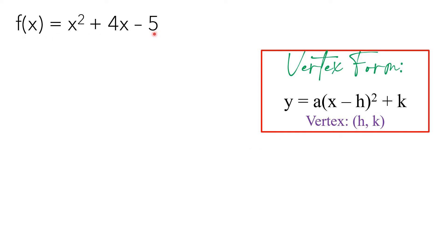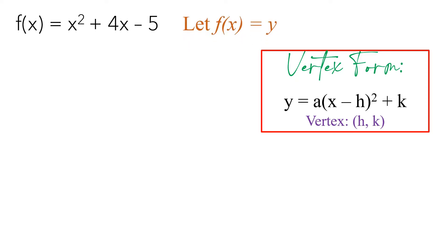Our example is f(x) equals x squared plus 4x minus 5. To start, let us let f(x) be equal to y, so it will become an equation. So let's write y for f(x), and then copy the rest: x squared plus 4x minus 5.